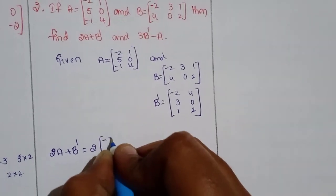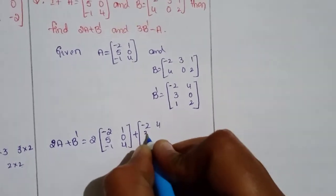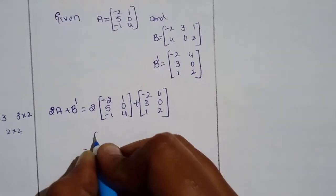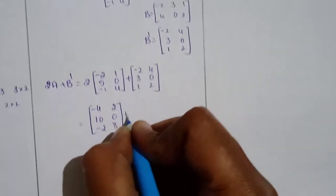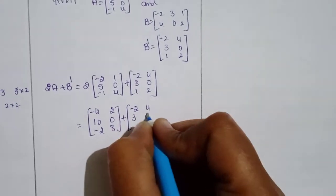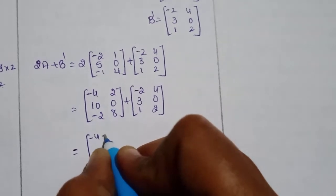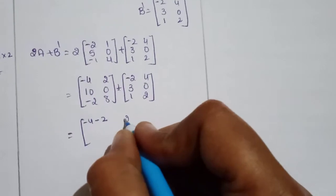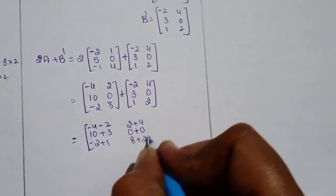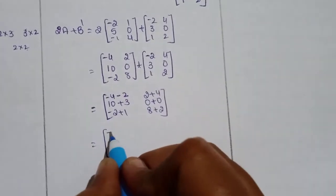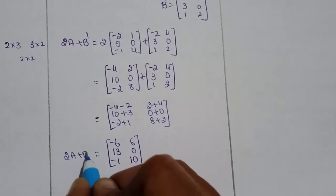2A = [-4, 2, 10; 0, -2, 8]. Adding B^T = [-2, 4; 3, 0; 1, 2]: -4+(-2)=-6; 2+4=6; 10+3=13; 0+0=0; -2+1=-1; 8+2=10. Therefore 2A + B^T = [-6, 6, 13; 0, -1, 10].